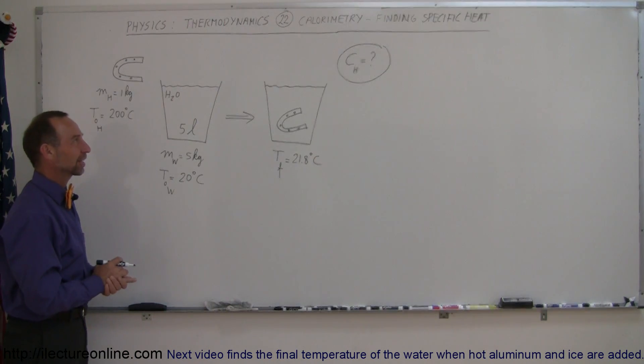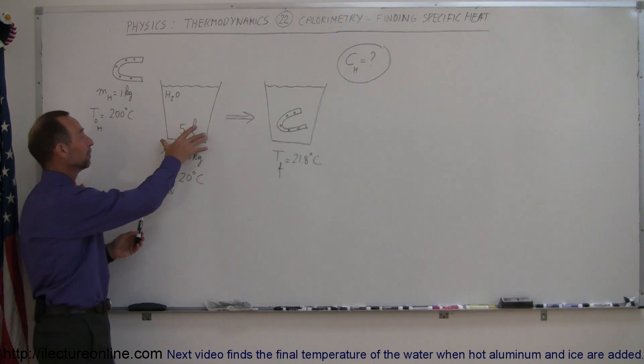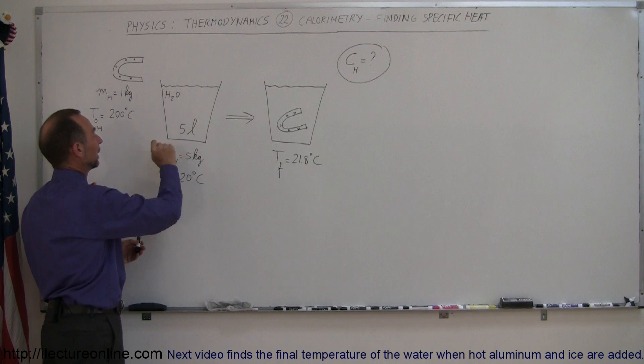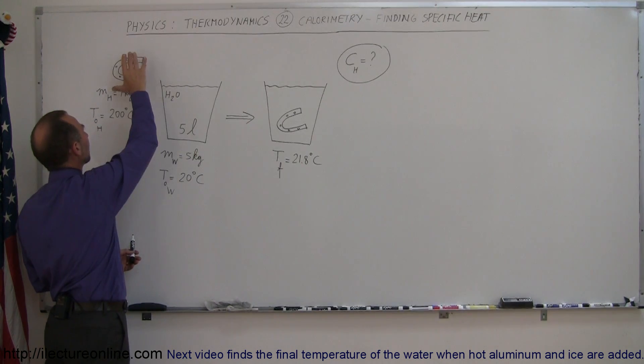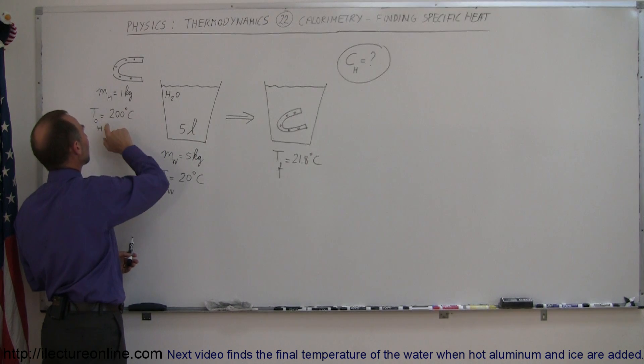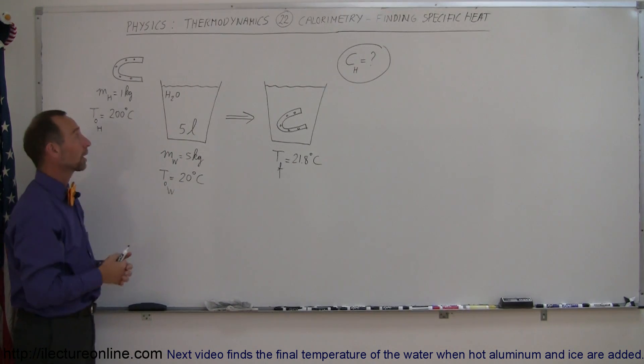Our next problem here deals with a calorimeter problem. It's not really a calorimeter we're dealing with, but we do have a bucket of water. Five liters of water. The water starts at 20 degrees centigrade. And we have a horseshoe with a mass of one kilogram, which has been heated to 200 degrees centigrade. Let's say a blacksmith was doing work on it.